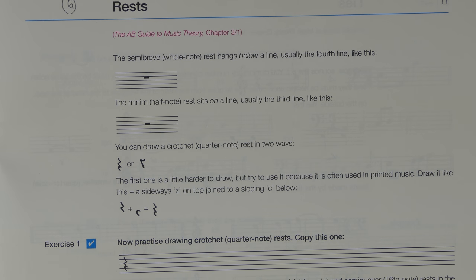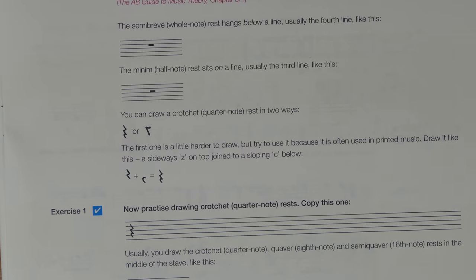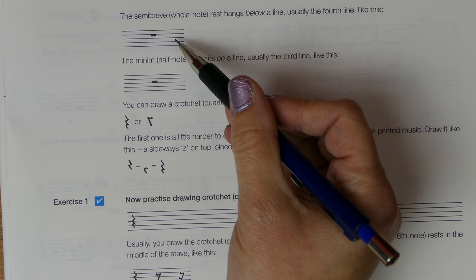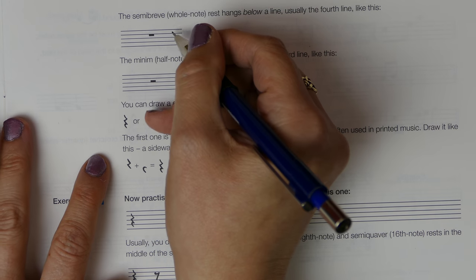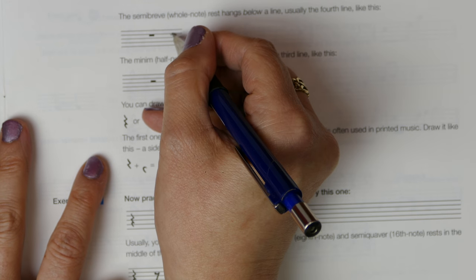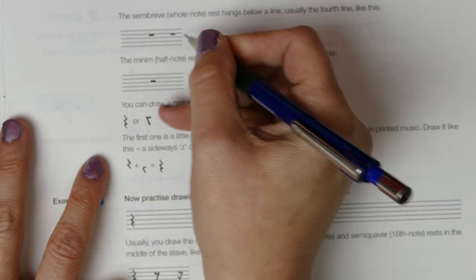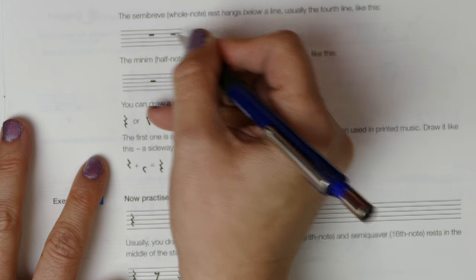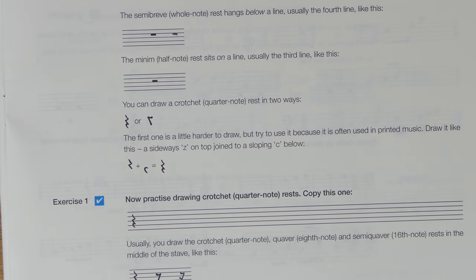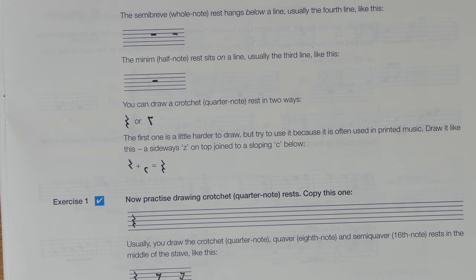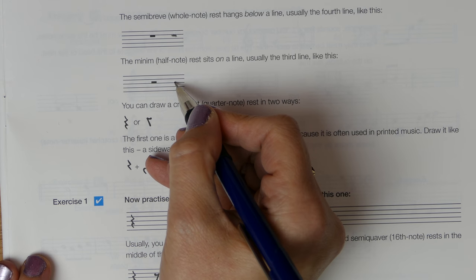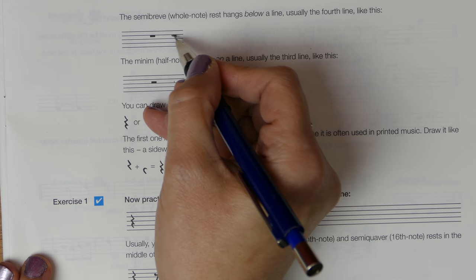So let's go back to page eleven. Here we're drawn to the semi-breve rest. By all means, this is your workbook, so have a little go at copying that semi-breve rest. Make sure your pencil's sharp because we don't want the box filling up the whole space. That's our four beat rest hanging from the fourth line.